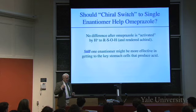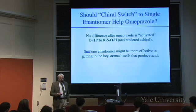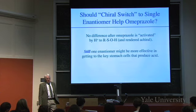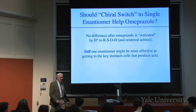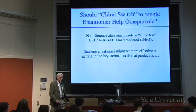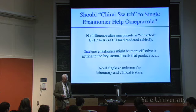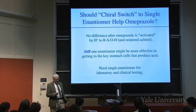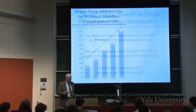It could be that one enantiomer is better at getting through the digestive system and getting back to the stomach in order to do the trick, so it's still possible. How would you find out whether it's worth using a single enantiomer? You'd do a clinical trial. But in order to do that you need a single enantiomer in order to do the laboratory and the clinical testing.